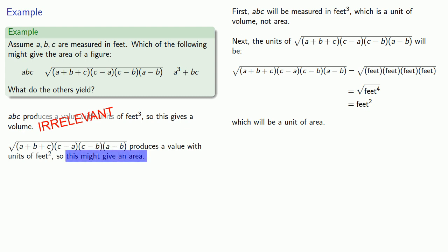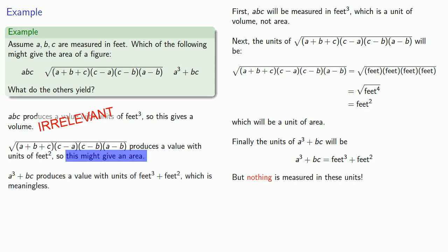And finally, let's take a look at our last expression. The units of a cubed plus b squared are going to be feet cubed plus feet squared, but because these are dissimilar units, I can't combine them in any way, and there's nothing that we measure in units of feet cubed plus feet squared. So this means that this particular expression is meaningless.